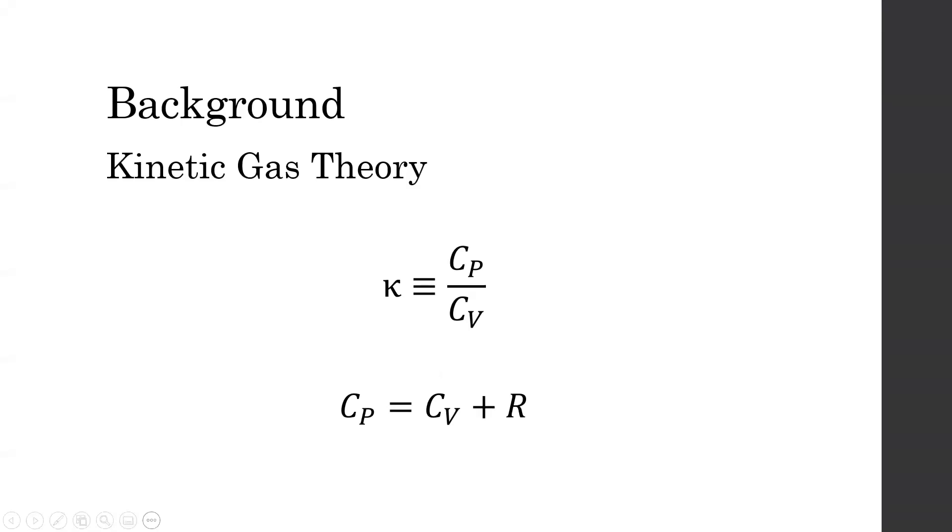We could therefore measure Cv, use it to find Cp, and then take the division to find kappa, but we aim to verify that the oscillation of a steel ball on a cushion of gas can also find kappa for that gas.